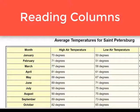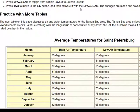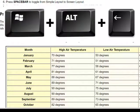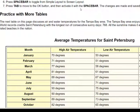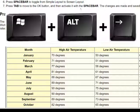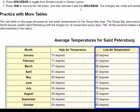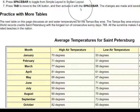To read an entire column, hold down the Windows key and ALT and press left arrow. It goes back to high air temperature and reads: 70 degrees, 71 degrees, 77 degrees — press CTRL to stop the voice. If you press Windows+ALT+right arrow, it reads the low air temperature column: 50 degrees, 51 degrees, 58 degrees. Again, use CTRL to stop the voice.